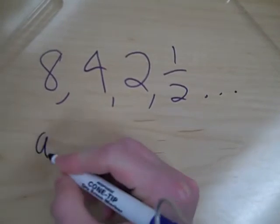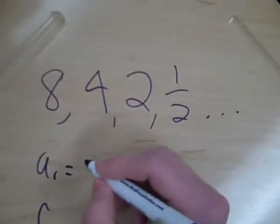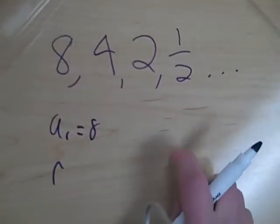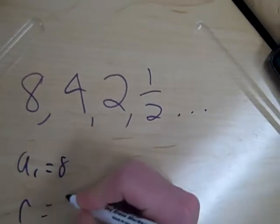My name is Jim and to start out we need to get the a1 value and the r. The a1 is the first term and that's 8. And to get the r value you just divide 4 by 8 to get 1 half.